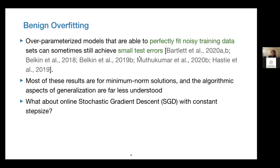This phenomenon is called benign overfitting, named in a seminal paper by Bartlett et al. A natural question is how and when this benign overfitting phenomenon can occur in practice. To answer this, a line of papers over the past two to three years has tried to prove benign overfitting for over-parameterized machine learning models such as linear regression or logistic regression, when the number of parameters is larger than the number of training data points.